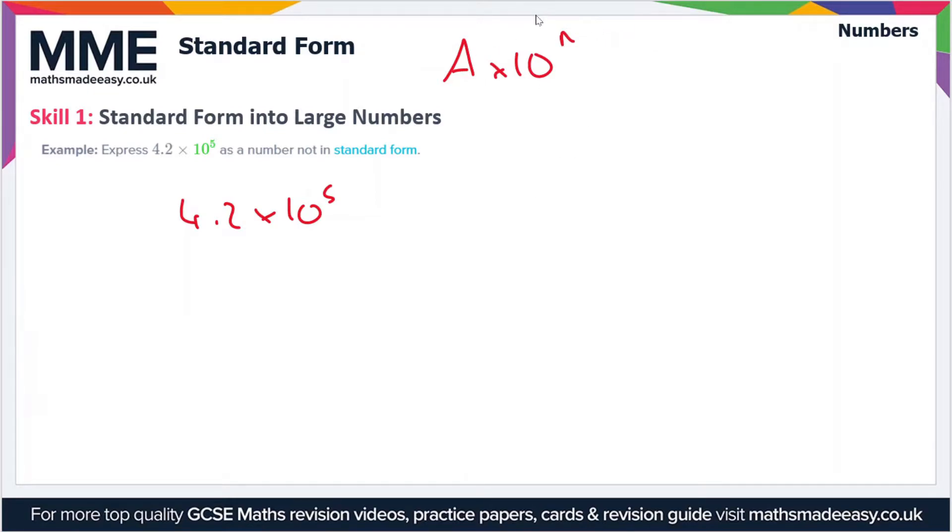And now this n is going to come in useful here. So we want to write this number as a normal number, not in standard form. So what we have to do is we'll write out this 4.2 and we'll put a few zeros in as well, and that'll do. And now what this n tells us is how many places we have to move the decimal place.